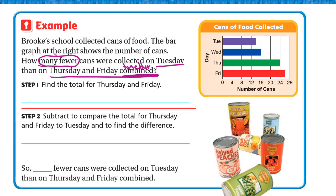Step one: find the total for Thursday and Friday. Thursday is 24. Friday is between 24 and 28, so in the middle it's 26. So 24 plus 26 equals 50.